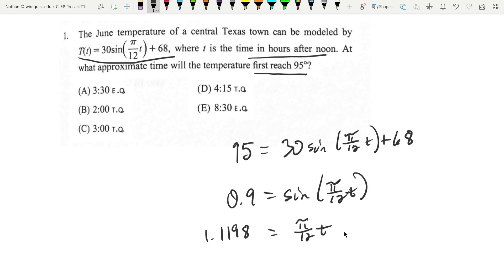Now all we have to do is multiply by 12 and divide by pi. So multiplying by 12 and then dividing by pi, I'm just doing this on my calculator here. That's going to give us approximately 4.277, that's about 4.25 hours after noon.